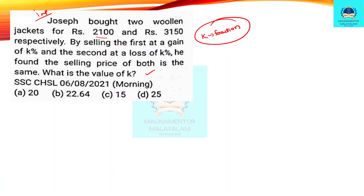By selling the first at a gain of K percentage, the first day's cost price is 250. The selling price is cost price multiplied by (100 plus K) percentage. Now K is a fraction: 1 plus K. The cost price is 250, that is 1 plus K. Now, 1 is 100 percent, and K is the fractional gain.